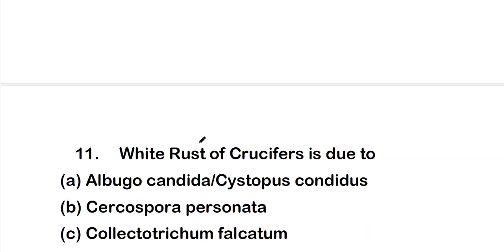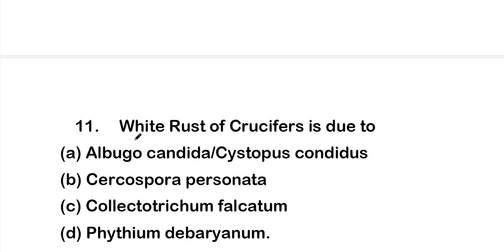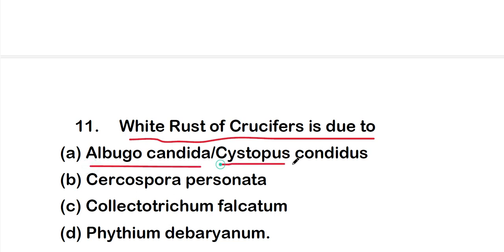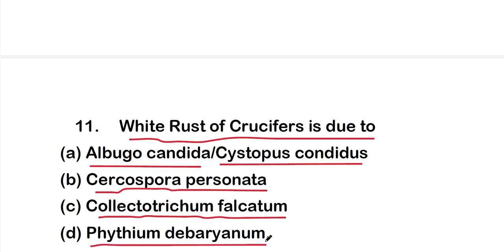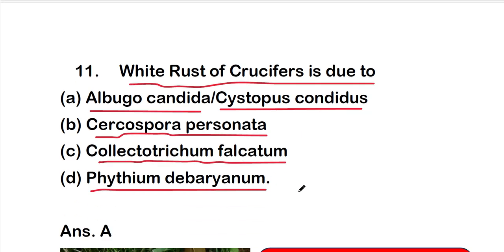Question 11: white rust of crucifers is due to — option A: Albugo candida or Cystopus candidus, option B: Cercospora personata, option C: Colletotrichum falcatum, or option D: Pythium debaryanum. The right answer is option A, Albugo candida.